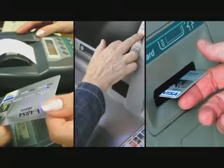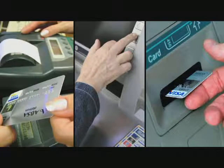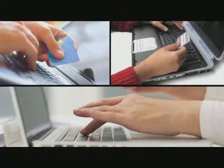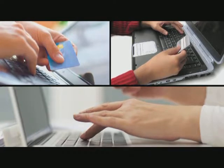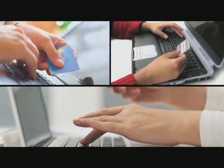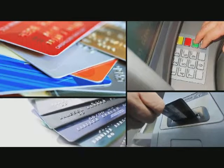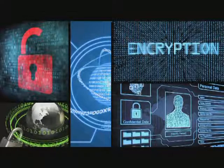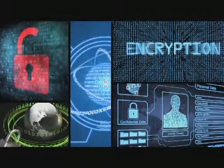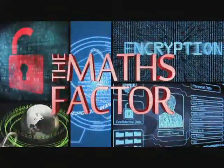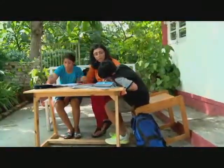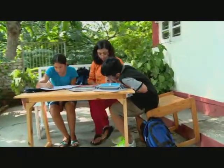Every time you use an ATM or buy something on the internet with your credit card, you use prime numbers to keep your personal information secure. Let me try and explain as simply as possible. It's through a process called encryption. But first, let's see how codes work.